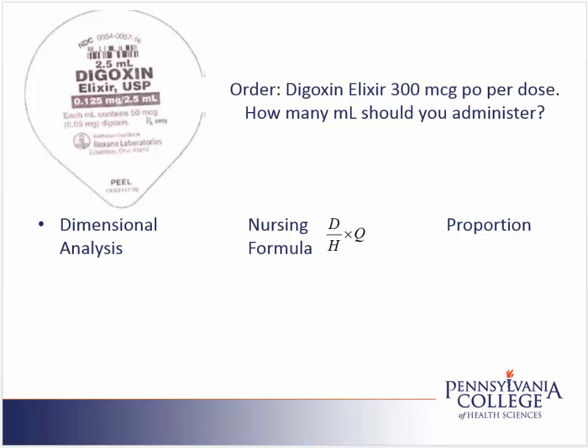We are solving a dosing problem. When we look at the problem, we see that 300 micrograms orally per dose has been ordered, and we're asked how many milliliters to administer. We're going to look at the problem using the three different methods that can be used for dosing problems.